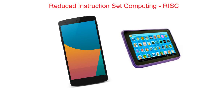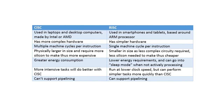Most smartphones and tablets use a reduced instruction set computing architecture based around the ARM processor. To summarise, here are the key differences between the two types of processor architecture. Study it and make sure you understand the difference between the CISC processor architecture and the RISC processor architecture.